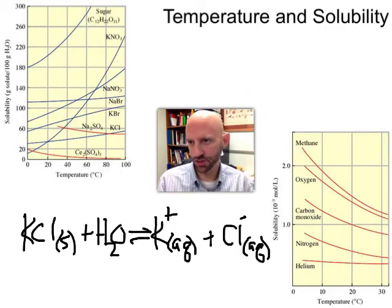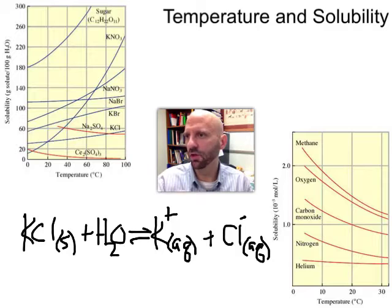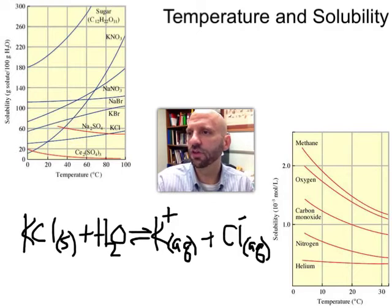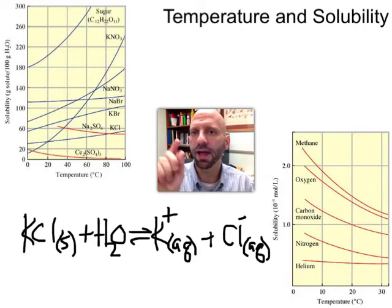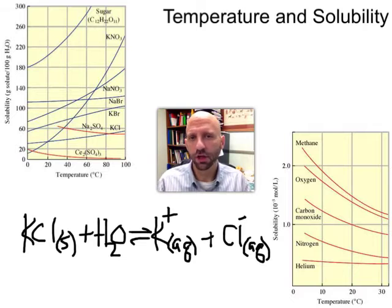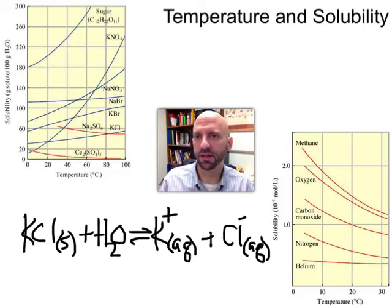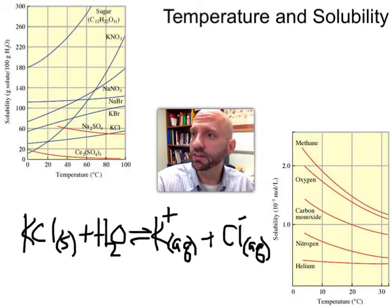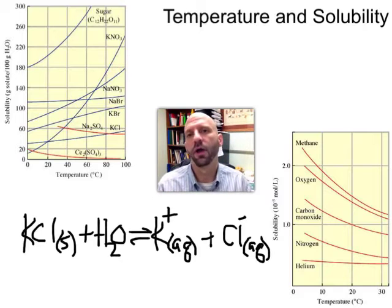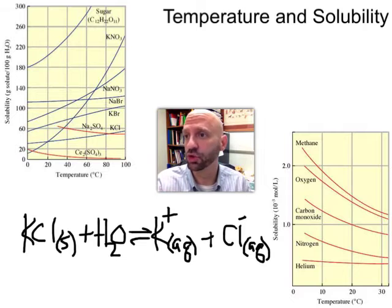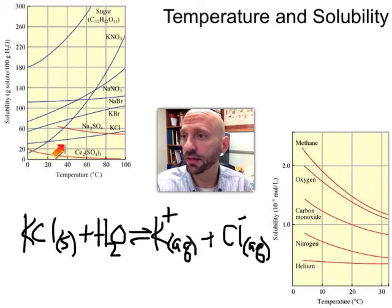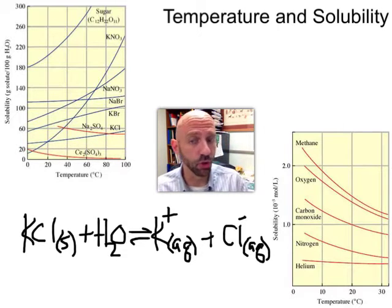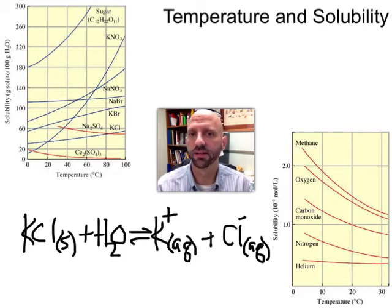So here's the question. KCl we see that its solubility goes up a little bit as we increase temperature. So is that indicative of an endothermic or an exothermic heat of solution? Or more generally all these blue lines that go up as temperature increases are all of those representing endo or exothermic heats of solution? And these couple of red lines are they exo or endothermic? Let's see if we can rationalize this through.